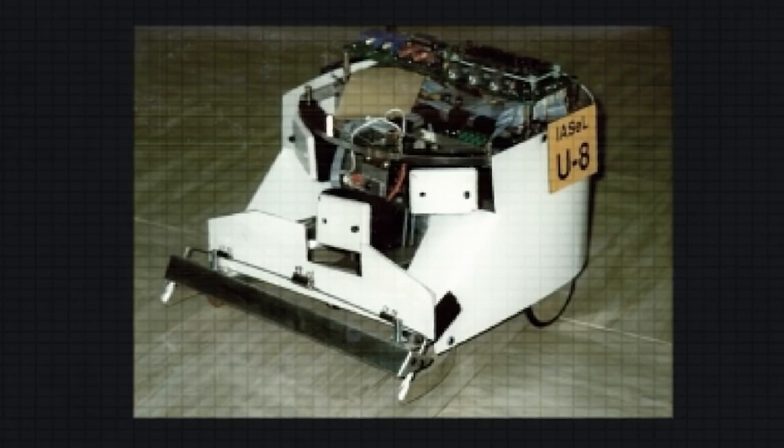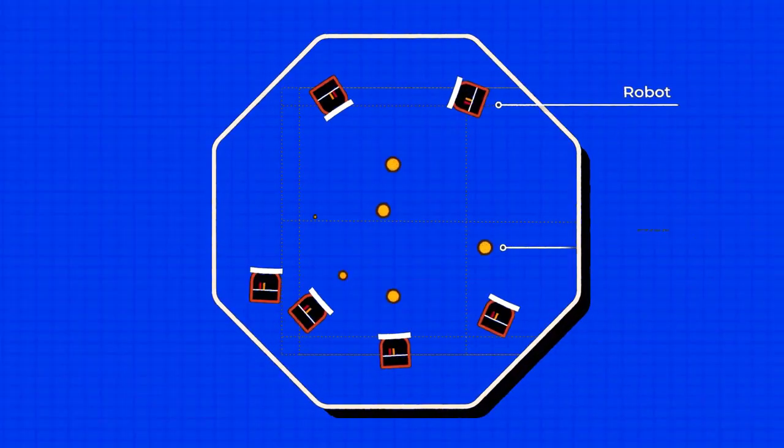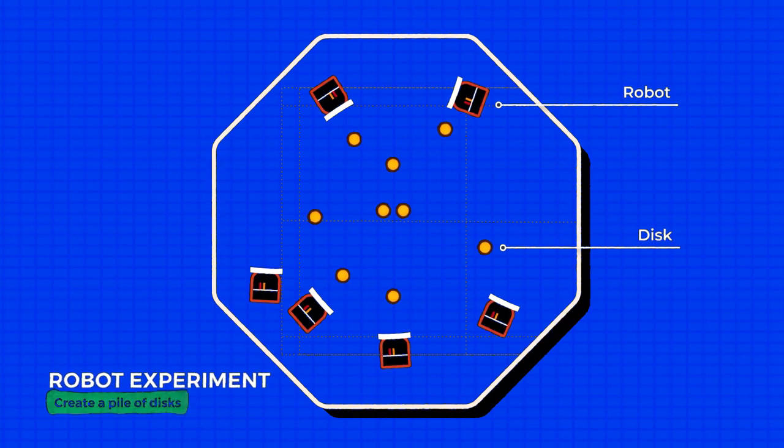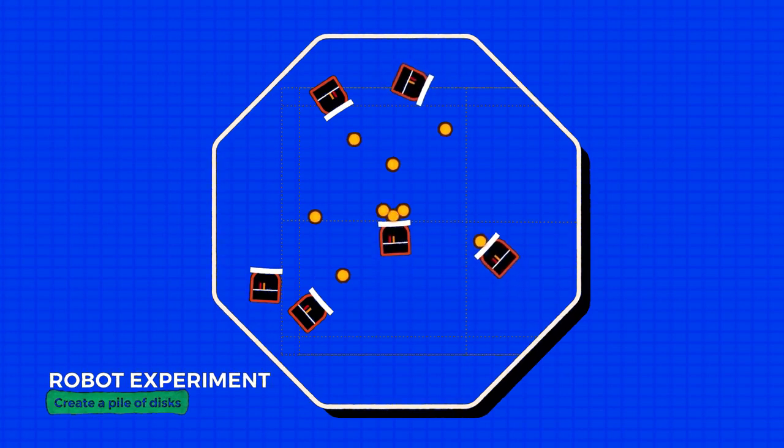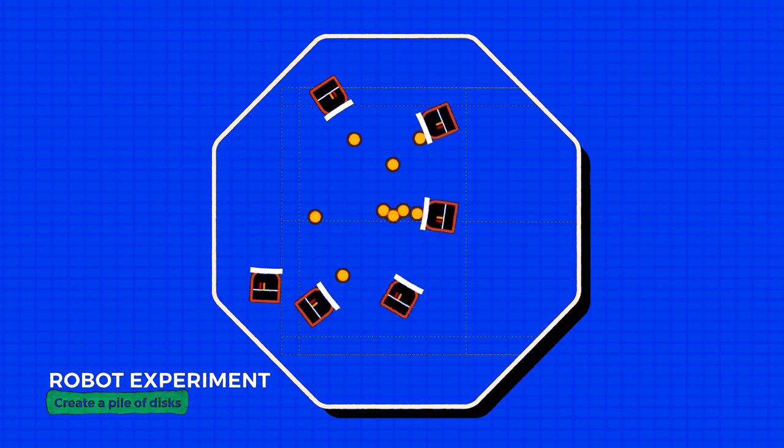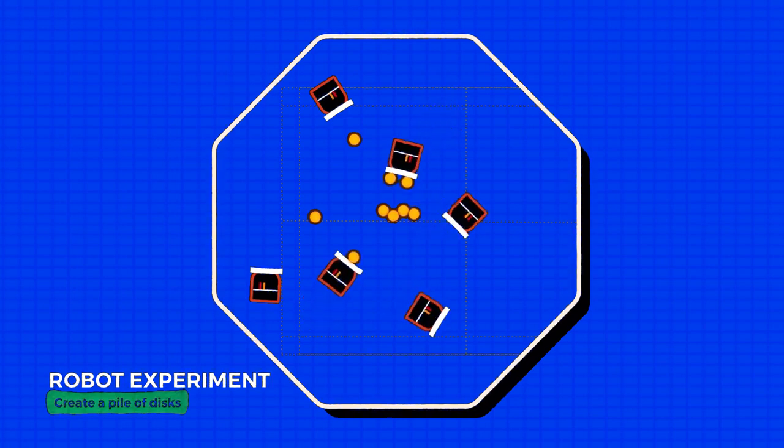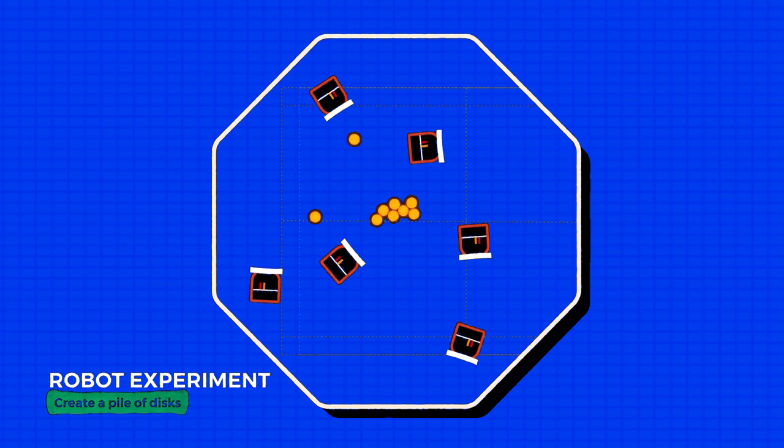These are sensorless robots, each with a little scoop on its front, designed simply to drive around. In their environment are many small disks. The robots don't know about any other robots, can't sense if they're touching anything, and can't tell if they're touching a disk. But as it randomly drives around by chance, it will eventually start pushing a disk. The robot can push one disk or maybe two, but if it comes across a pile of disks, the robot isn't strong enough to keep pushing, so it's forced to reposition itself and let go, inadvertently adding its disk to the pile.